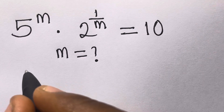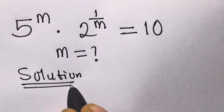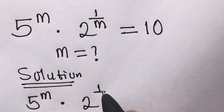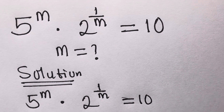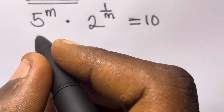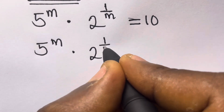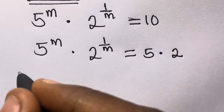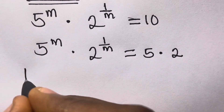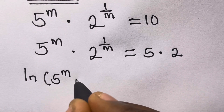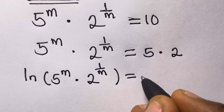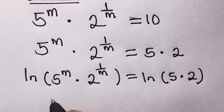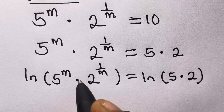Let's do it together — solution. We have 5 raised to power m times 2 raised to power 1 divided by m equals 10. Now 10 can be broken into the product of 5 and 2. So here we introduce ln to both sides: ln(5^m × 2^(1/m)) equals ln(5 × 2).